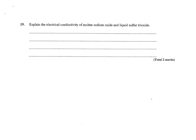And number 19, explain the electroconductivity of molten sodium oxide and liquid sulfur trioxide. Well, sodium oxide, Na2O, is an ionic compound. And when ionic compounds are liquid, the ions are free to move, which makes it a good conductor. It doesn't have to be electrons moving, it has to be charge moving for electrical conductivity.